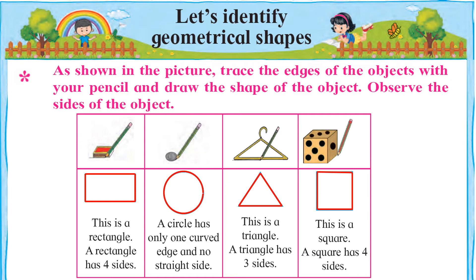Here is the instruction: try the fun activities given below. Yahan par chaar activities hain. Activity number one: make a paper boat, unfold it and count the number of triangles and four-sided figures, then color any two triangles and two four-sided figures. Activity number two: make triangles and four-sided figures using match sticks and small wooden strips. Maachis ki teeliyon ya lakdi ki choti choti pattiyon ki madad se mukhtalif four-sided figures yaani chaukon aur triangles banao.